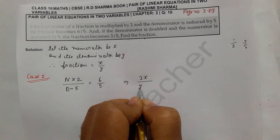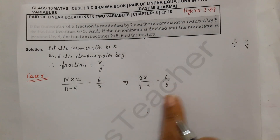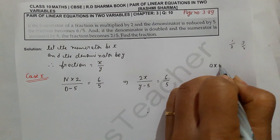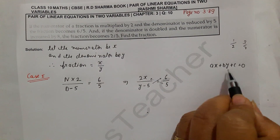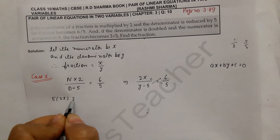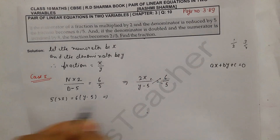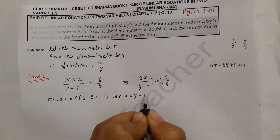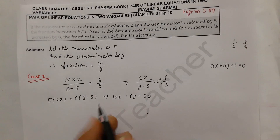Now we cross-multiply: 5 into 2x equals 6 into (y minus 5). So 10x equals 6y minus 30.